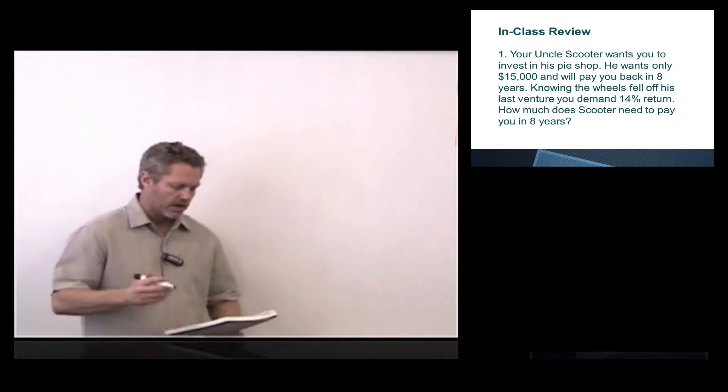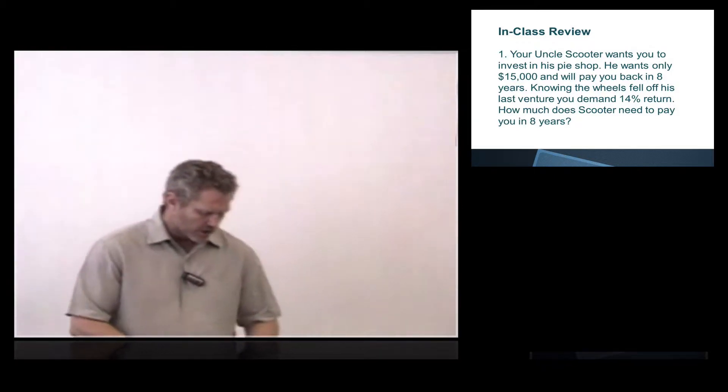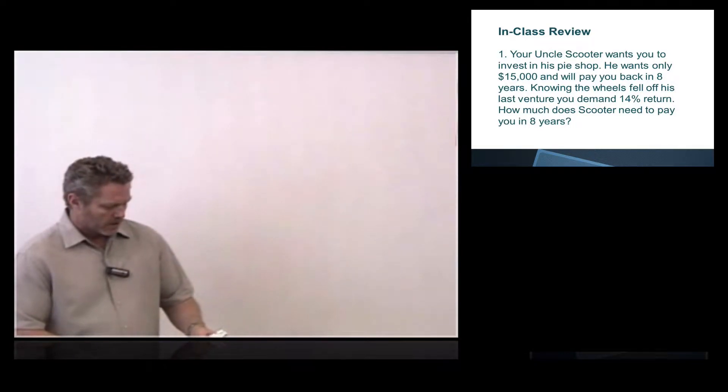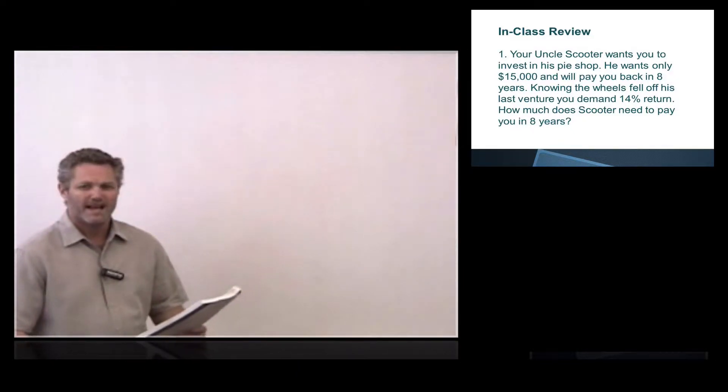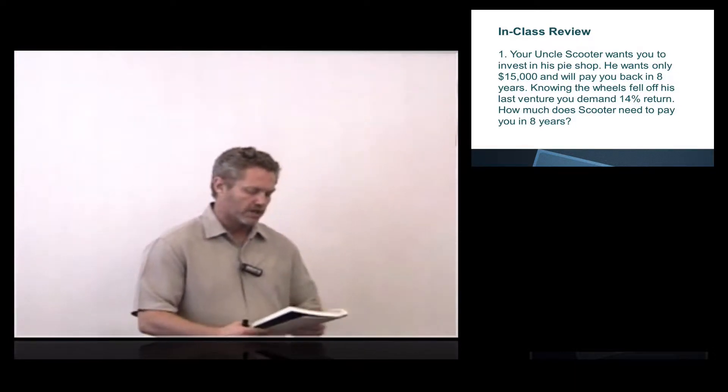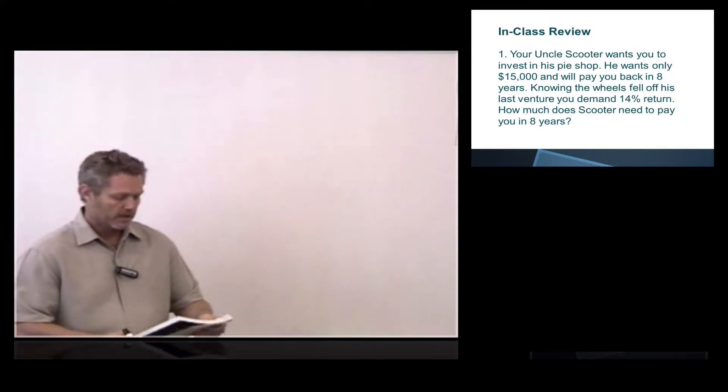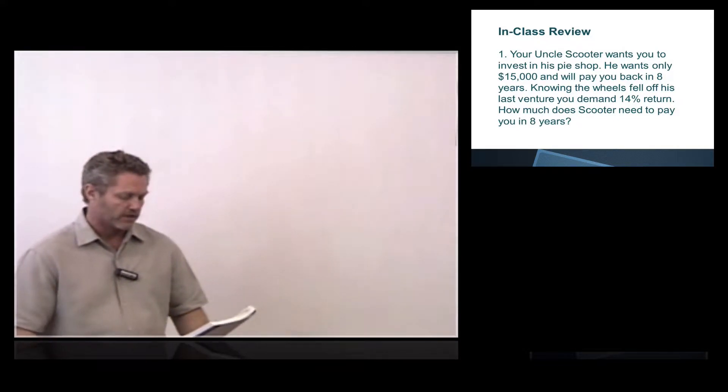We're going to walk through how to do this problem. I'll read it out loud, and then we will go through the process. In class review, page 15. Your Uncle Scooter wants you to invest in his pie shop. He wants only $15,000 and will pay you back in eight years. Knowing the wheels fell off his last venture, you demand 14%. Why are we demanding such a high interest rate? Because the wheels fell off his last venture, he's got a bad track record, he's got bad credit history probably. So therefore we need a higher rate of return.